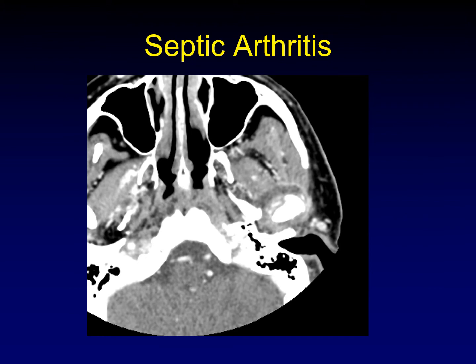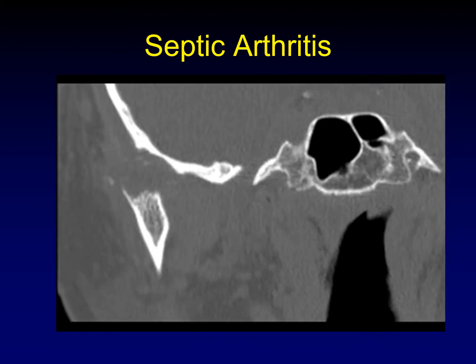When we see septic arthritis on CT, we see a proliferation of the synovial space — the joint space being expanded. It is frequently accompanied by erosions of the condylar head. This should be a nice round condylar head, but it's eroded all the way down to the condylar neck. That is, of course, a late stage of septic arthritis on CT.